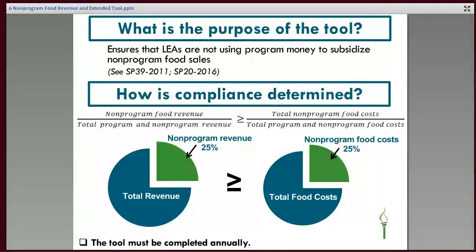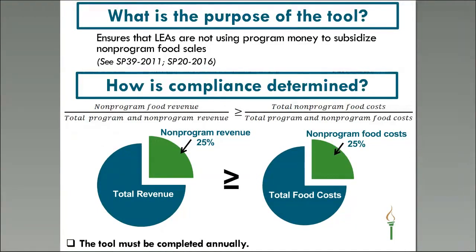The Non-Programmed Food Revenue tool is required to be completed annually, and it demonstrates that your revenue from sale of Non-Programmed Foods generates at least the same proportion of revenues as they contribute to the LEA's food costs. That basically means you aren't using program money — the federal reimbursement and student payments — to subsidize your Non-Programmed Food Sales or a la carte or adult meal sales. The requirement is that the ratio of Non-Programmed Food Revenue to Total Revenue is greater than the ratio of Non-Programmed Food Cost to Total Food Cost.